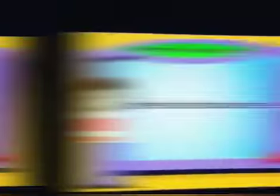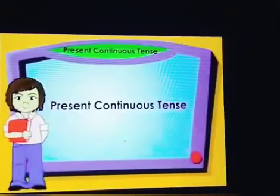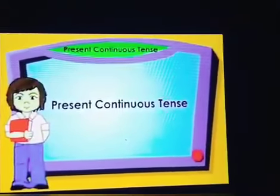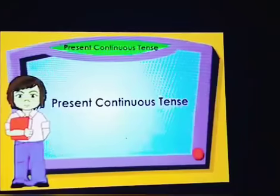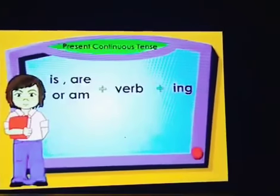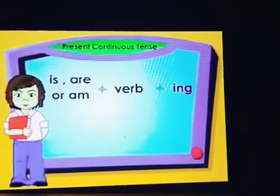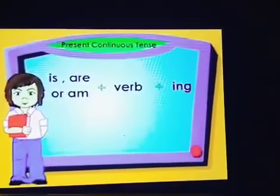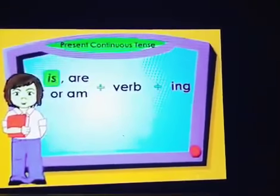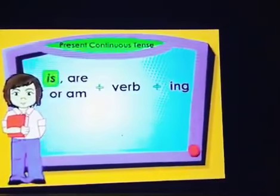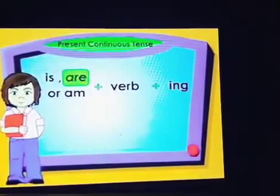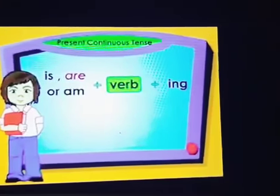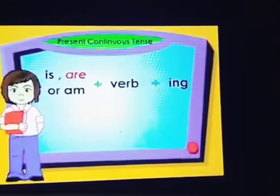This chapter is about the present continuous tense, so let's learn a bit more about it. Is, are or am is used in the present continuous tense with the verb plus ing.